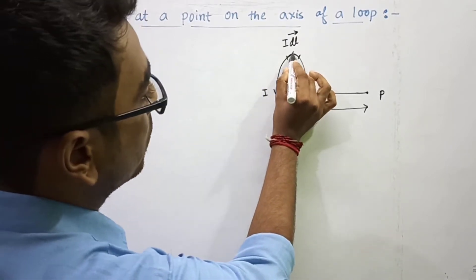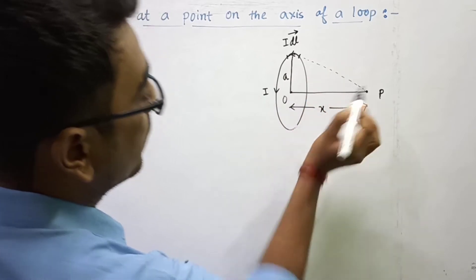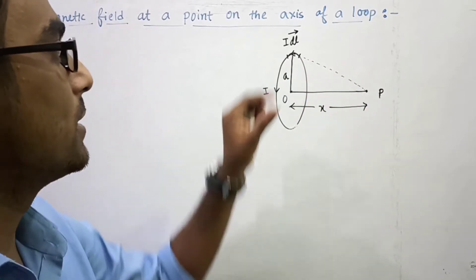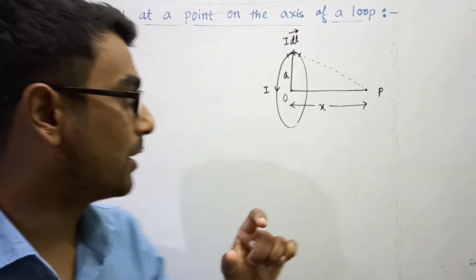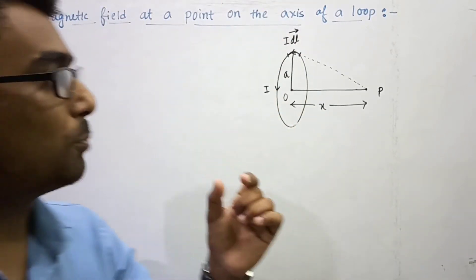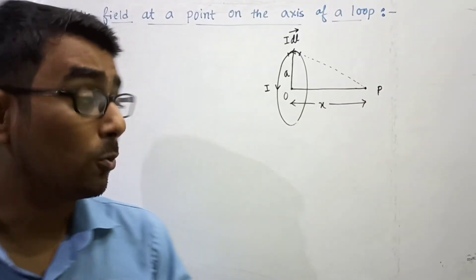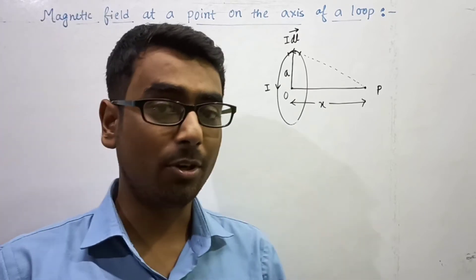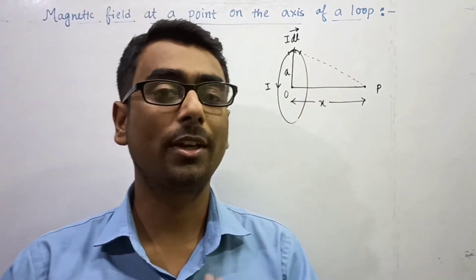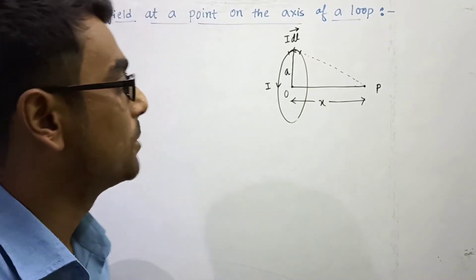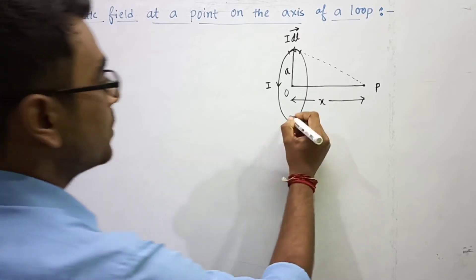From this element, if we join it to point P, the process is: we consider a small elementary dL portion, and for this elementary portion we first find the magnetic field at point P. After that, we integrate over the whole loop. After integration, the expression we get will be the final expression of magnetic field.